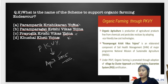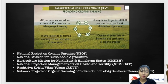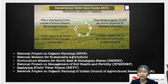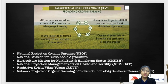PKVY was launched in April 2015 to support and promote organic farming. Under this scheme, around 50 farmers would come together and form a cluster of 50 acres of land to carry out organic farming in that particular area.